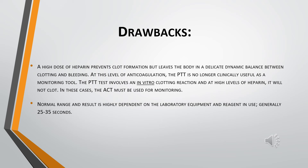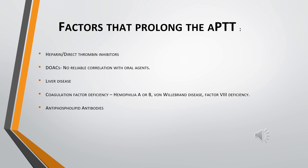There are two drawbacks of this method. First, when using a high dose of heparin, it prevents clot formation but leaves the body in a delicate dynamic balance between clotting and bleeding. At very high heparin levels, APTT is no longer useful and another method such as ACT must be used. Second, it depends on laboratory equipment and reagents, so each laboratory should establish its own APTT range. Factors that prolong APTT include heparin, direct thrombin inhibitors, liver disease, DOACs, coagulation factor deficiencies, and antiphospholipid antibodies.